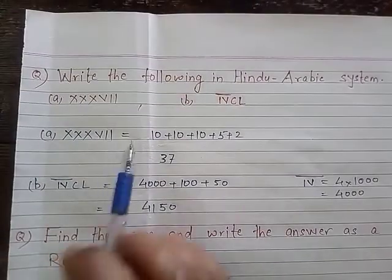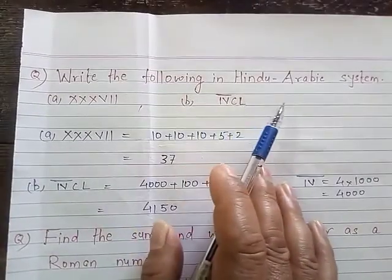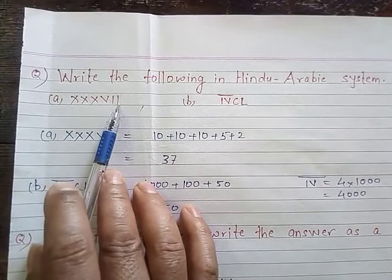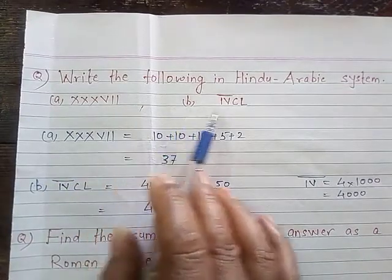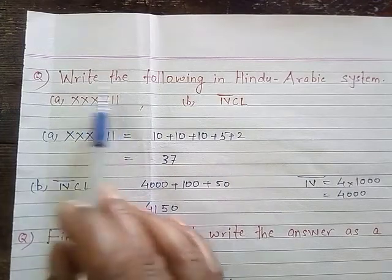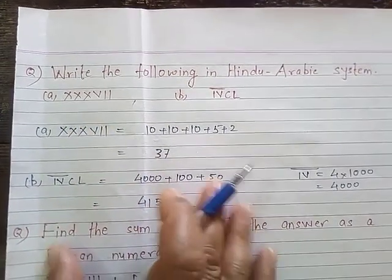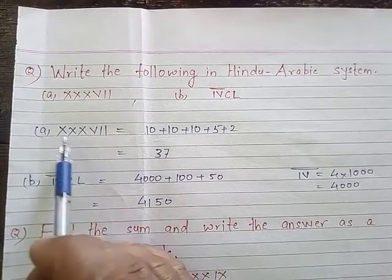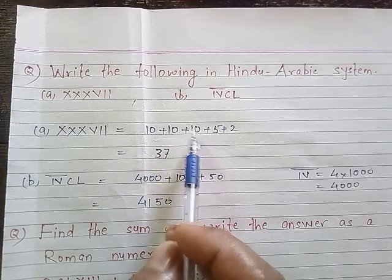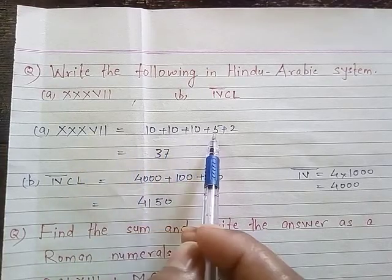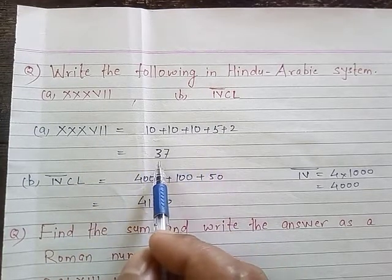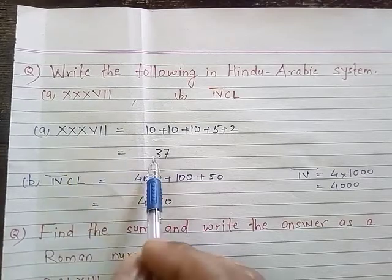Read the following in the Hindu-Arabic system: XXXVII. We break it down: XXX equals 10 plus 10 plus 10 equals 30, V stands for 5, and II stands for 2. After adding: 30 plus 5 plus 2 equals 37. So XXXVII is the symbol for 37.